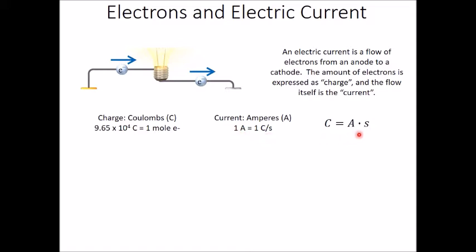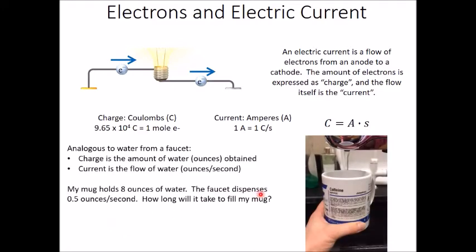And you can relate these two values through charge equals amperes times seconds. It's really analogous to water flowing from a faucet. The charge is the amount of water, the ounces of water that you obtain, and the current is the flow of the water, how many ounces per second come out of the faucet.